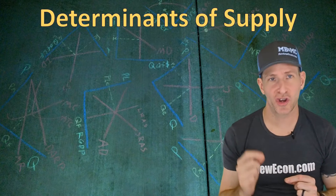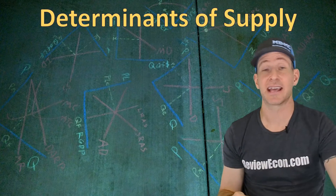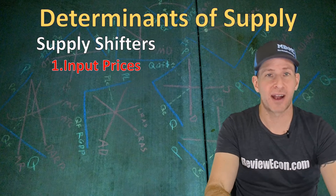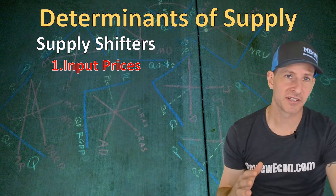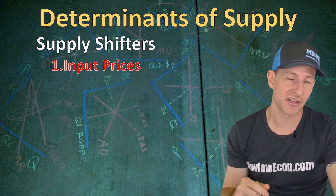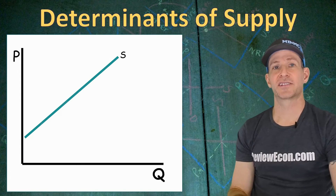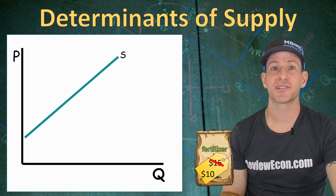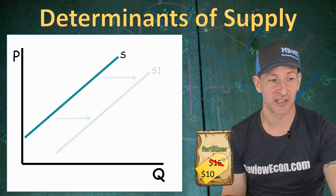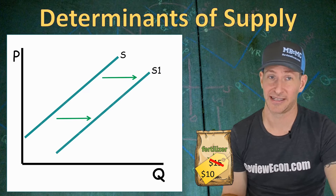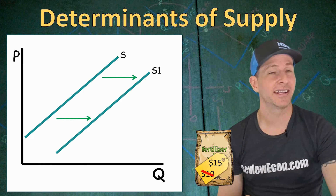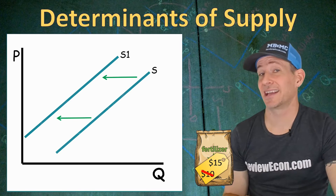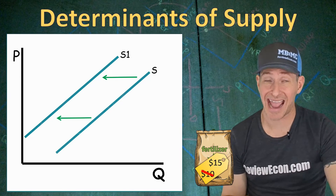Next, we'll look at the determinants of supply — the things that actually shift the supply curve left or right. The first is the price of inputs: the costs of raw materials and resources that go into production. If the price of fertilizer decreases, farmers can use more of it, increasing their production of wheat and shifting the supply curve right. But if the price of fertilizer increases, we'll see a decrease in the supply of wheat. There's an inverse relationship between the price of inputs and supply.